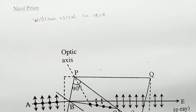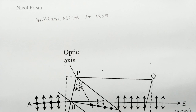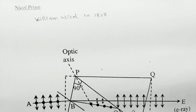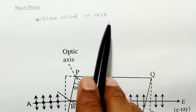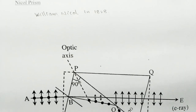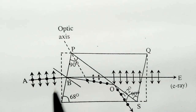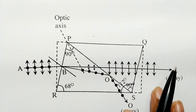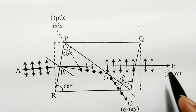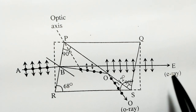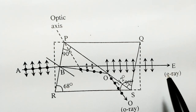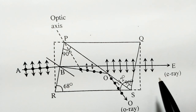Today I am going to discuss Nicol's Prism, an essay question from the polarization chapter. This device was invented by William Nicol in 1828. It is an optical device which converts ordinary unpolarized light into plane polarized light. It also functions as an analyzer.